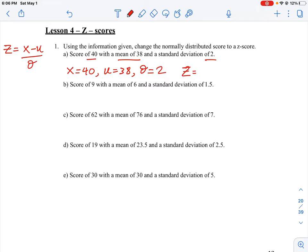So it's going to be 40 minus 38, all over 2, which equals 2 divided by 2, which is 1. So that means we standardize the score of 40 to have a Z-score of 1.